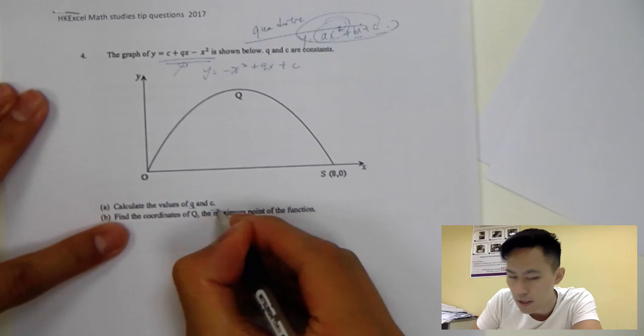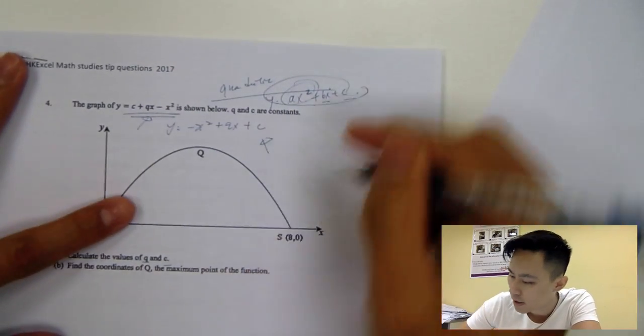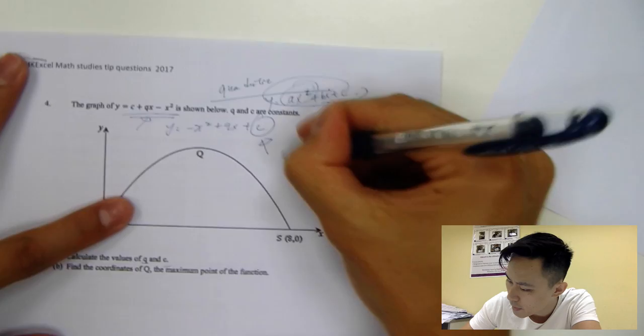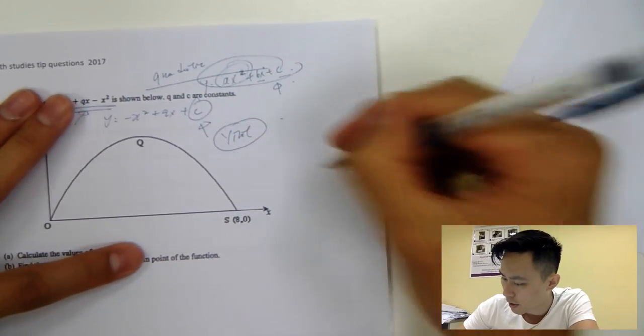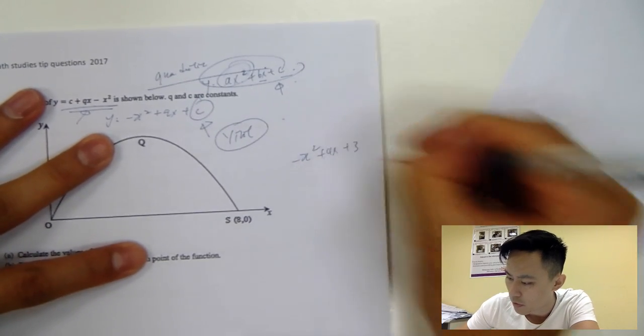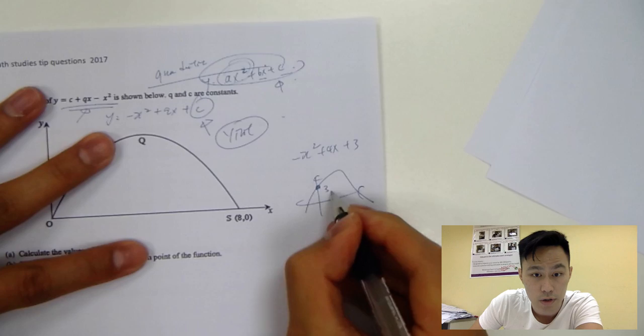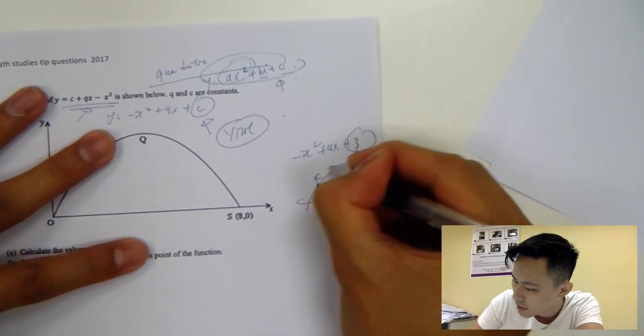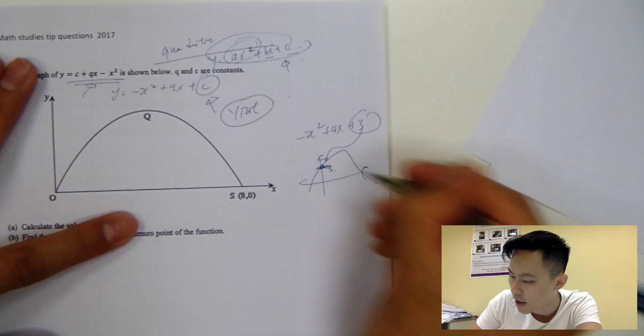Calculate the value of q and c. So what does it mean by the c here? The c here means the y-intercept, always remember. So example would be like this: if I give you minus x squared plus 4x plus 3, so the graph must be like this, and this point must be equal to 3. So this is y-intercept. Do you get that? Y-intercept - that means when x is equal to 0, y has one value.